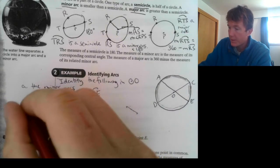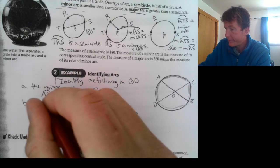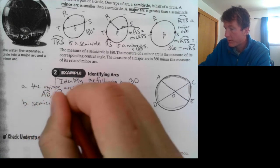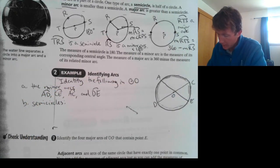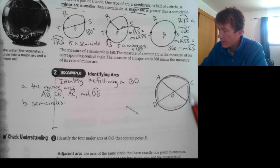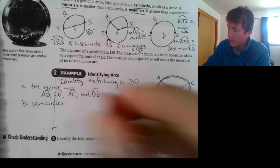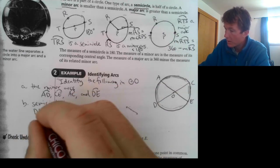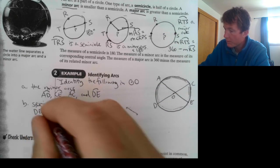Now, let's list our semicircles. Semicircles. Anything that spans half the circle. So, DEC is a semicircle. DEC would be one. ECA is another one.